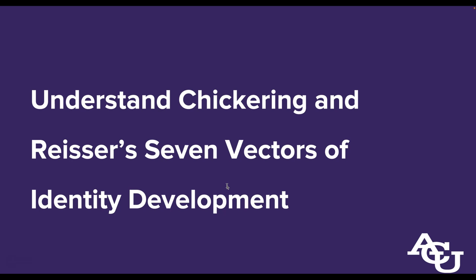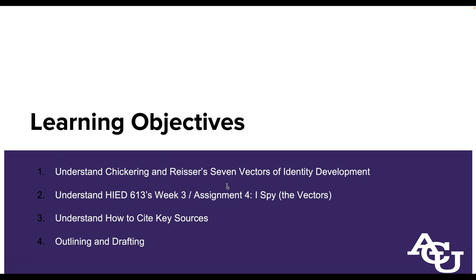Let's do a quick recap of what we've talked about today. We began with looking at Chickering and Reiser's Seven Vectors of Identity Development as laid out in their 1993 update of Education and Identity. We looked specifically at the Higher Education 613 Week 3 Assignment 4, 'I Spy the Vectors.' We talked about how to reference and cite key sources, how to take the assignment instructions and begin outlining and drafting, and the last thing we're going to do is look at how to find additional sources in case you want something more specific to supplement what you already have.